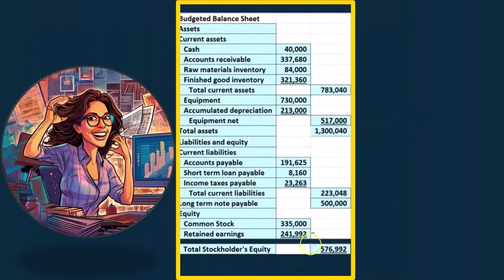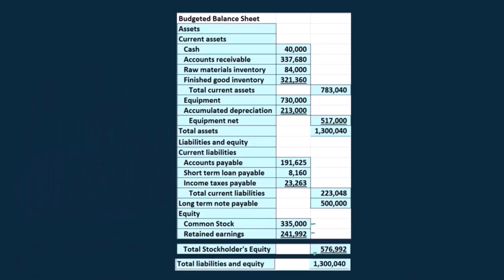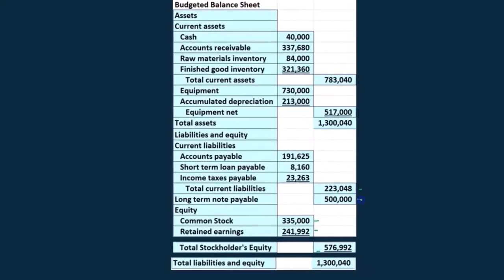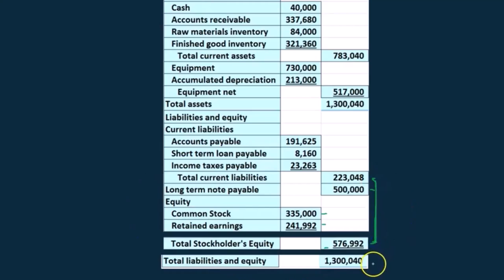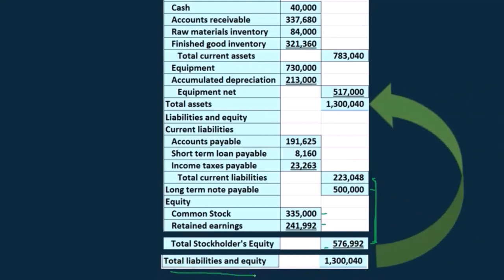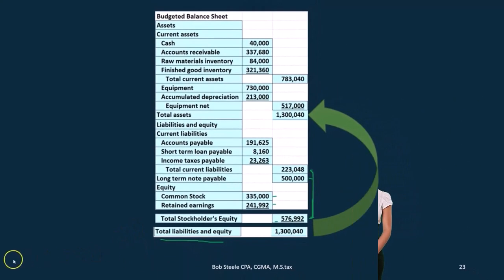Then we're going to have total stockholders' equity, which will be $335,000 plus $241,992, giving us $576,992. Adding up the total liabilities and equity — current liabilities, plus the note, plus total equity — these three add up to $1,300,040. And of course the total liabilities and equity will equal total assets, so we are in balance in our budgeted balance sheet.